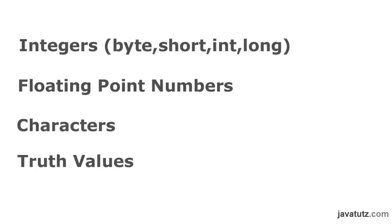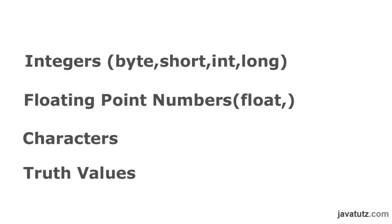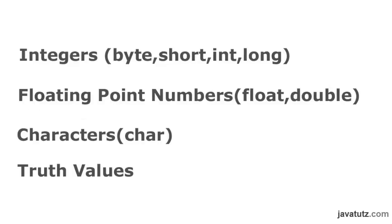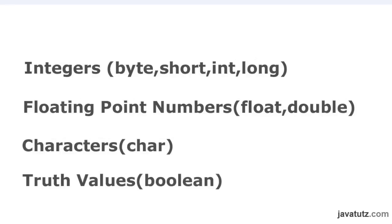For decimal values, we also call them floating point values, we have two data types: float and double. For characters, we have the data type char. And to represent truth values, we have the data type boolean.